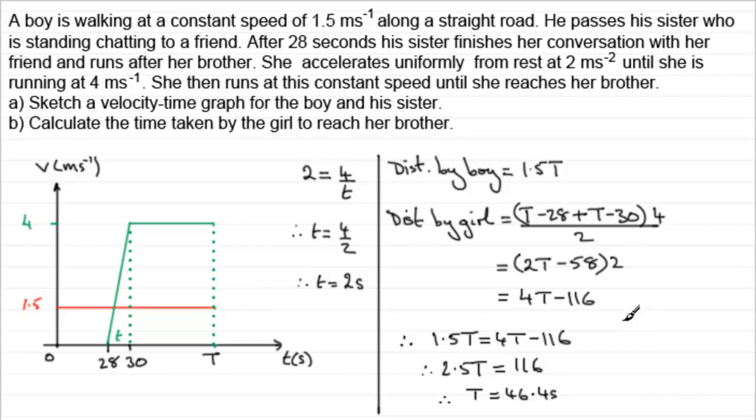So if we just finish this off we can say that therefore the time taken by the girl equals 46.4 minus the 28, and that's going to leave you with 18.4 seconds. 18.4 seconds then it took the girl to reach her brother.